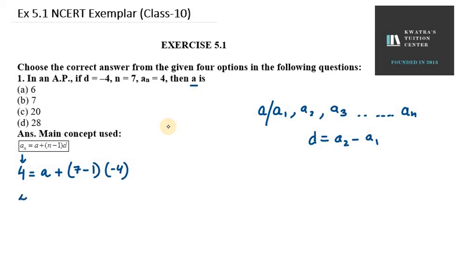Now, on the left hand side, we have 4. And on the right hand side, we have A, plus 7 minus 1 is 6. 6 into minus 4 is minus 24.